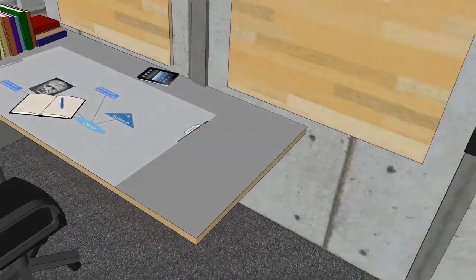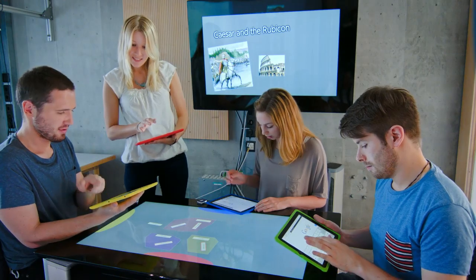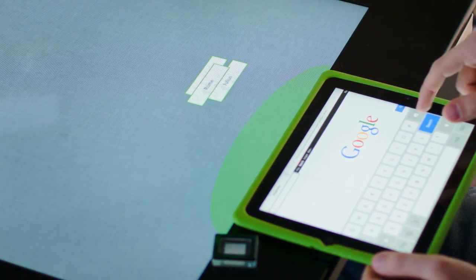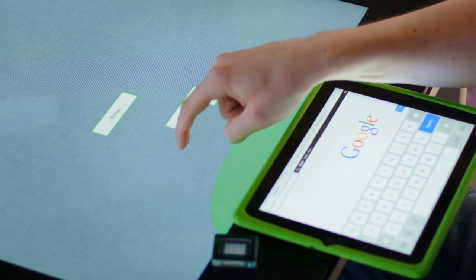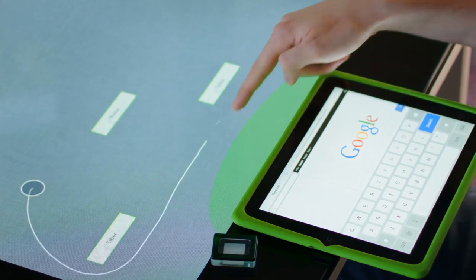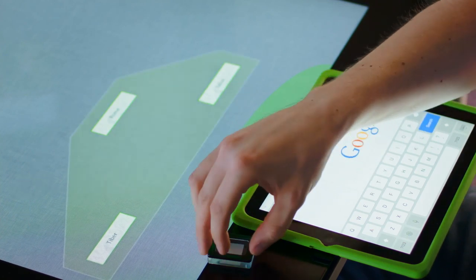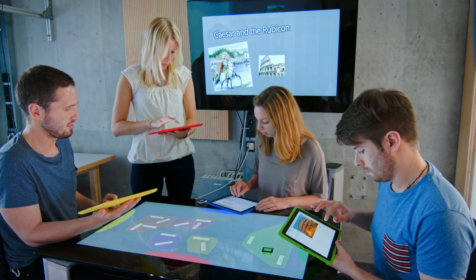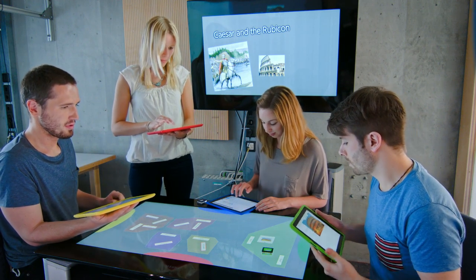While Lena was creating the mind map, the others started to search for Caesar and the Rubicon in the World Wide Web. Before they started their individual searches, they collect and create clusters of keywords with Twister Search, which is now running on the interactive table. These clusters usually group semantically coherent keywords where a cluster defines one search topic. A token acts as a tablet proxy which distributes the keywords of a cluster to that tablet.